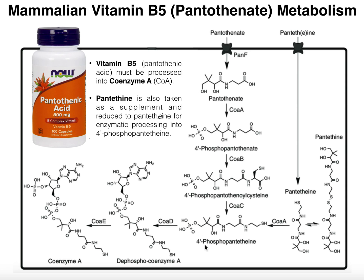We do have another means to generate 4'-phosphopantothenoyl, and that's through this molecule, pantothine, which can actually be formed in an equilibrium reaction from pantothenoyl. Pantothenoyl is actually another form of vitamin B5 that can also be taken, although it's less common. The pantothenoyl can be imported into the cell and can undergo one of two reactions: either it can be oxidized with another molecule of itself into pantothine — notice the sulfur here can be oxidized into a disulfide linkage — or it can react with this enzyme CoaA, shown right here, and transform pantothenoyl ultimately into 4'-phosphopantothenoyl. So CoaA can react with pantothenoyl, giving us two sources potentially for 4'-phosphopantothenoyl.